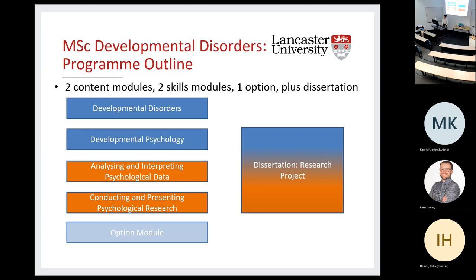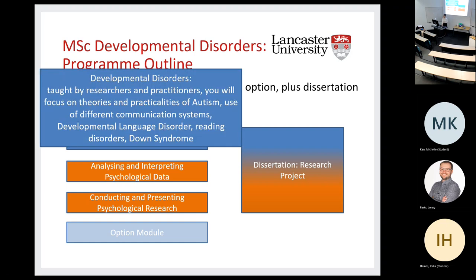Going through the course content: you'll have two content modules, two skills modules, an option module you choose from several options, and running alongside throughout the whole year is your research dissertation where you'll work closely with a supervisor. The developmental disorders content module is taught by both researchers and practitioners in the field, focusing on theories and practicalities of working with populations with autism — because some methods that work with typical populations don't work as well with people with autism, who need adaptive and creative approaches.